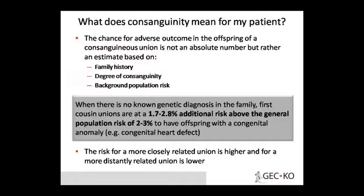Why are we studying consanguinity? Because there are chances of having adverse outcomes in offspring. In Mendelian pattern of inheritance — autosomal dominant and autosomal recessive — dominant traits show directly, while recessive traits remain as carriers. A recessive trait only shows when it is in homozygous condition. When there is consanguinity, there are increased chances of these traits reaching homozygous condition.